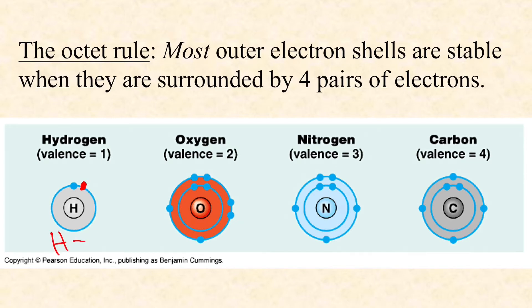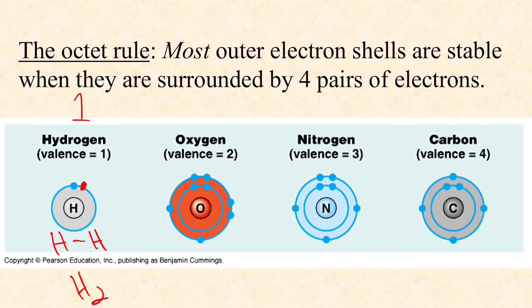Hydrogen likes to enter into one covalent bond with another atom that has an electron it needs to pair off. When they share those electrons, they've stabilized both of their outermost electron shells. For example, hydrogen can be single-bonded to hydrogen — that's H2. They're both happy because there's a pair of electrons between them, and each nucleus needs two electrons around it to be stable.